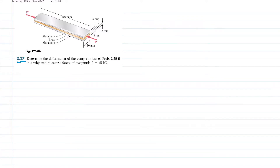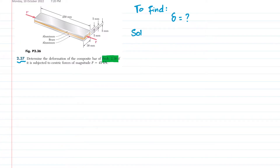Welcome back. Problem 2.37: determine the deformation of the composite bar from problem 2.36, if it is subjected to a centric force P = 45 kilo newton. In problem 2.36, we discussed this bar, which is composed of three layers: two of aluminum (the outer ones) and one brass in the middle. The thickness of each bar is 5 millimeters, the width is 30 millimeters, and the total length is 250 millimeters.